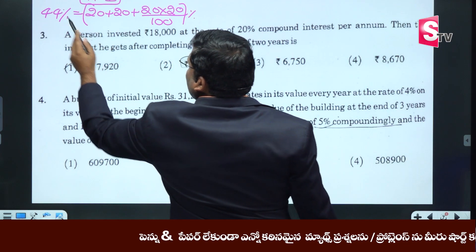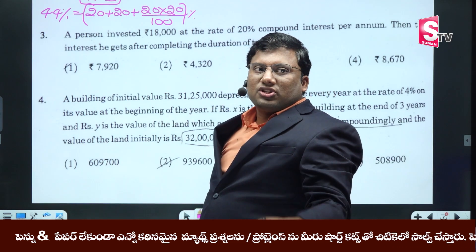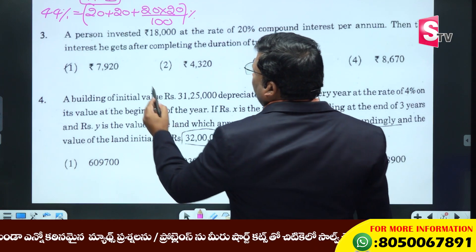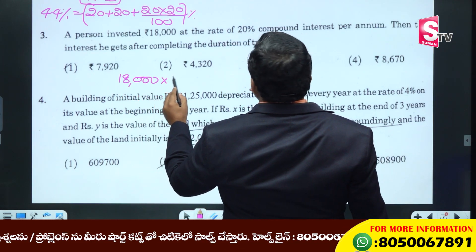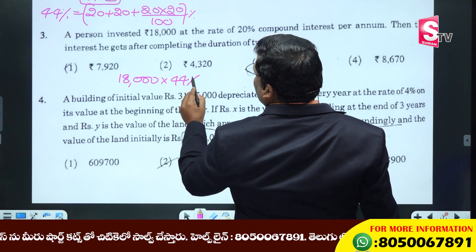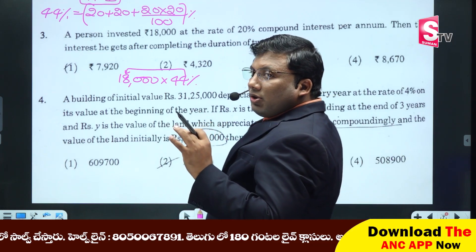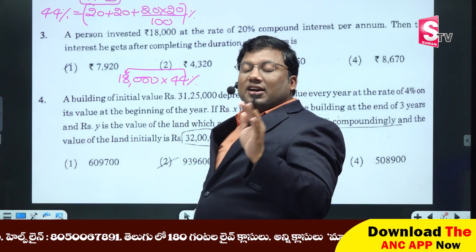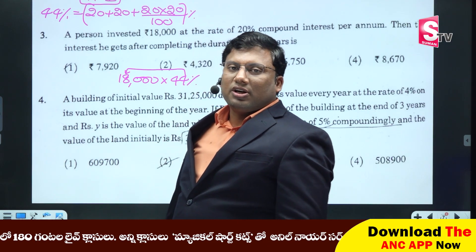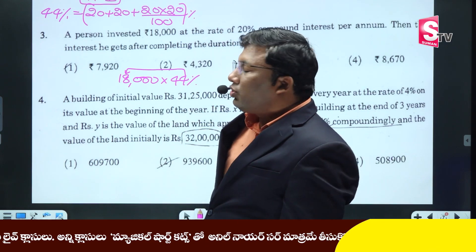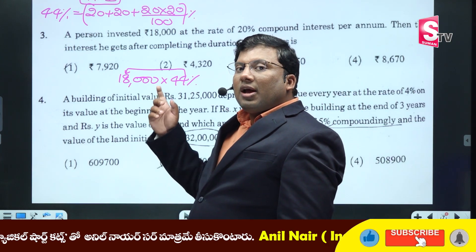At 20% for two years: A plus B plus A into B by 100 gives 44%. So 20% compounded twice equals 44 percent. The interest on 18,000 at 44% is calculated accordingly.